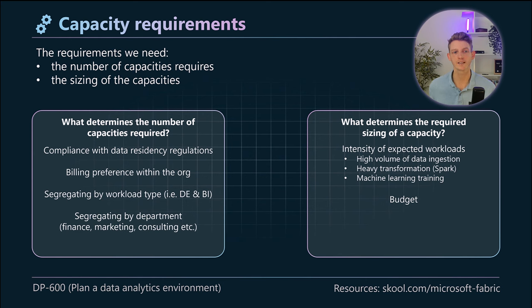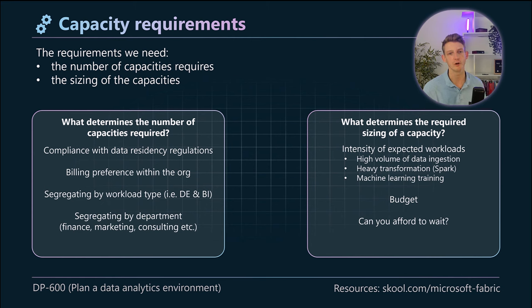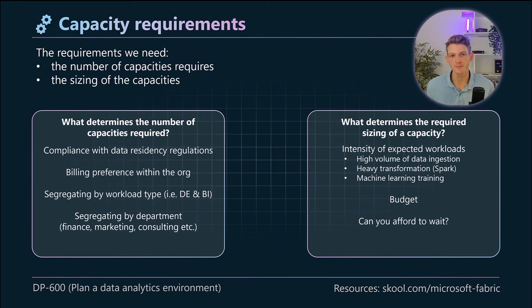The budget of your client also dictates the capacity sizing — the higher the SKU, the more expensive it will be, and some clients are sensitive around cost. Related to that is: can the client afford to wait? If you use an F2 SKU, it will process your data but may take a very long time. In some businesses that's fine — maybe you do data ingestion once per day overnight and the data is ready by morning. But if you have gigabytes of data coming in every hour, you need a high capacity to process everything before the next hourly load.